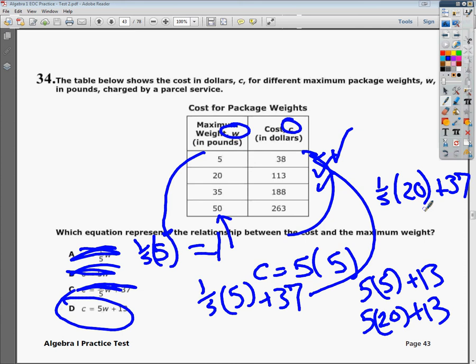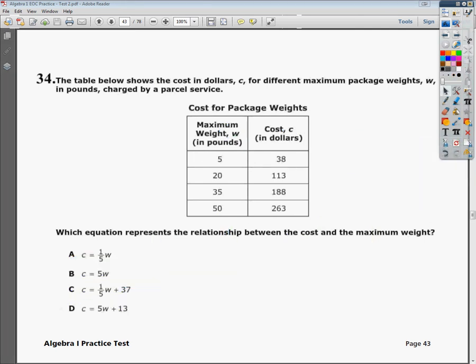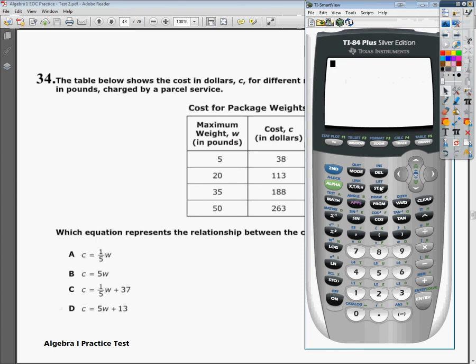Now, if you are a calculator junkie or you just love doing linear regressions or whatever reason, I'm going to show you how to do that one really quickly. So I'm going to go into the list. I'm going to edit lists. I'm just going to punch all my independent variables, or my x's or w's in this case, in L1, and I'm going to do all my L2s. L2 is going to have my C values or my dependent variables. So I need to quit out so I can work with them.